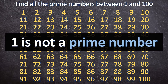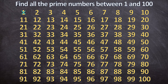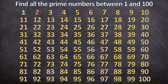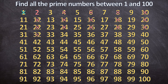So let's do this step by step. First, we cross out 1 because it's not a prime number. Next, we highlight 2 and cross out all of its multiples: 4, 6, 8, 10, 12, 14, 16, 18, 20, and you carry on until you've reached 100.